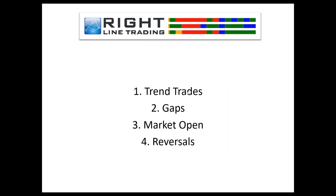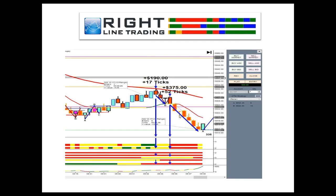The tick data is much faster than the volume data — volume tends to be slower and more stable, while tick data moves faster. The auto is only going to trade the trend. It's not going to trade gaps, market opens, or reversals — you can use the cash metrics for those — but the auto only looks at trend trades. It doesn't counter-trend trade, trade market opens, or trade gaps.